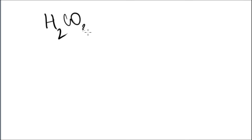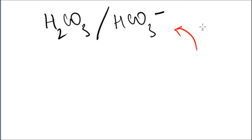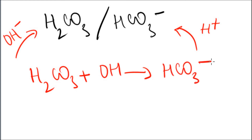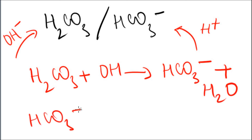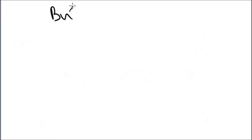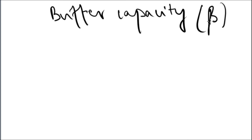Taking the carbonate buffer as an example of how a buffer system works: when an acid is added, the base component reacts with it — the hydroxyl group reacts with the acid — and the acidic form converts to the basic form, hydrogen carbonate, producing water, which is neutral, thereby neutralizing the compound. When a base is added, the acid component reacts with the hydrogen carbonate, converting it back to carbonic acid, H₂CO₃.